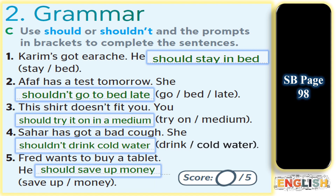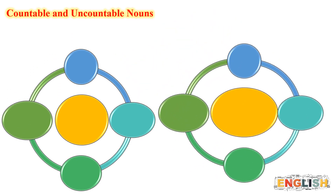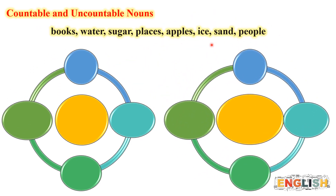Let's first have a look at the objectives of today's lesson. Today I will be able to: 1. Apply the use of the verb 'should' accurately. 2. Apply the use of quantifiers accurately. So today we have two objectives to achieve.